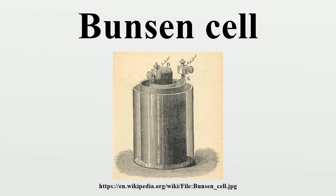The cell is named after its inventor, German chemist Robert Wilhelm Bunsen, who improved upon the Grove cell by replacing Grove's expensive platinum cathode with carbon in the form of pulverized coal and coke. Like Grove's battery, Bunsen's emitted noxious fumes of nitrogen dioxide.